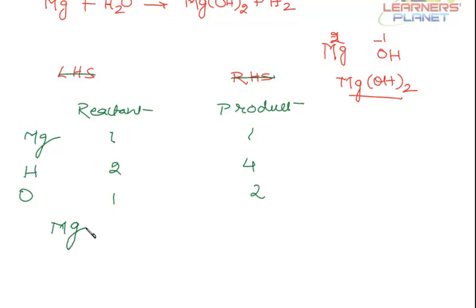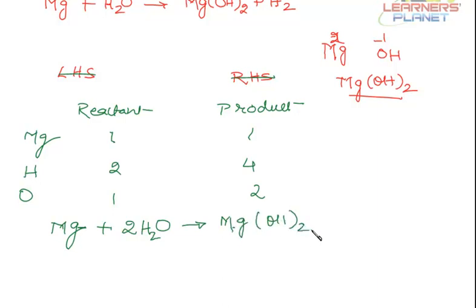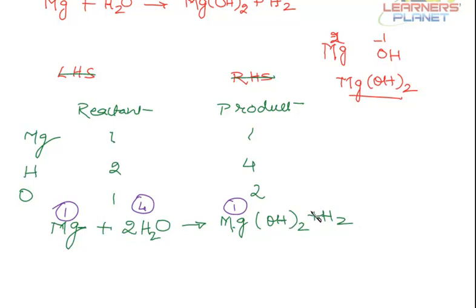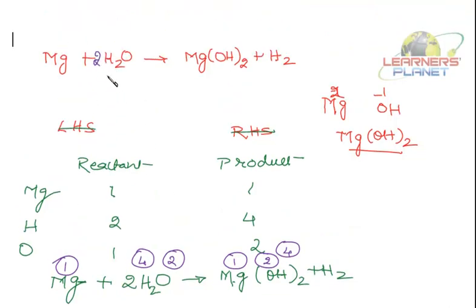Now is the equation balanced? Magnesium: 1 atom, 1 atom. Hydrogen: now there are 4 atoms on the reactant side (2×2), and 2 plus 2 gives 4 atoms of hydrogen on the product side. Oxygen: 2 atoms on the reactant side, 2 atoms on the product side. So the equation is balanced: Mg plus 2 H₂O gives Mg(OH)₂ plus H₂.